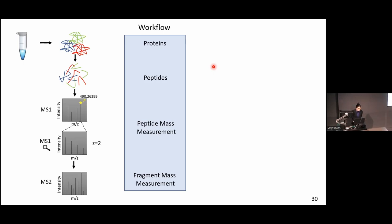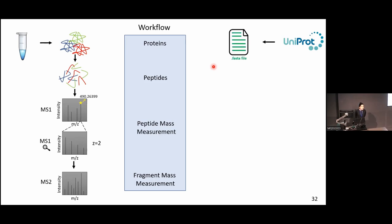Let's see how it will help us. We have our sample and usually we are aware of the organism the sample came from. Based on this information, we go to a protein database — for example UniProt — and download the protein database for that organism. We download it as a FASTA file, which contains a list of proteins we expect to have in that organism.